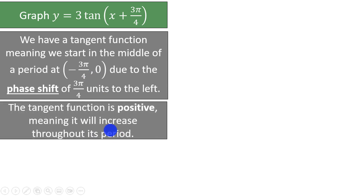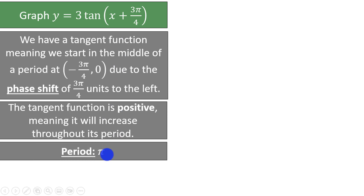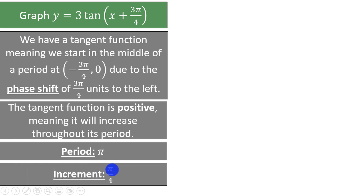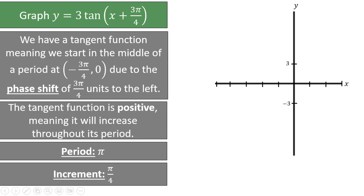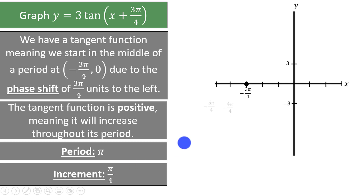This is a positive tangent function, meaning it will increase throughout its period. Since we do not have a coefficient multiplying x, the period is just pi. The increment is 1 quarter of that, which is pi over 4. We already stated that we have the point (negative 3pi over 4, 0) on the graph — this will be right in the middle of a period. I typically increment 2 times to the left to get to the start of a period, giving us negative 4pi over 4 and negative 5pi over 4.